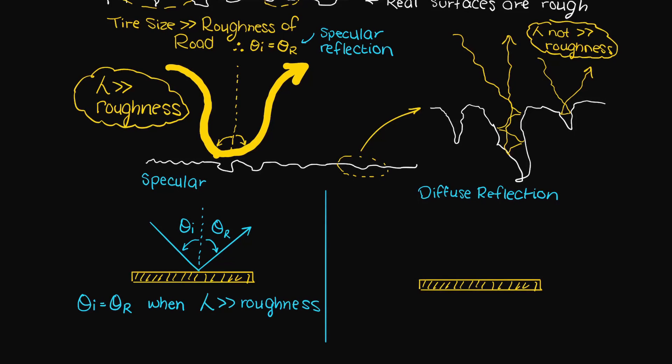However what if our incoming wavelengths are not significantly larger than the roughness of our surface? Well then what we have is called diffuse reflection. And as we can see here our radiant energy bounces off in every possible direction and not in one concentrated ray like in specular reflection.